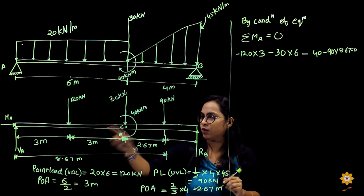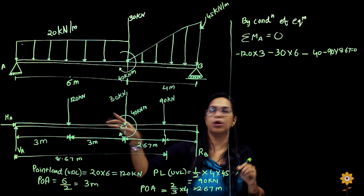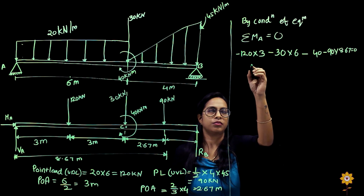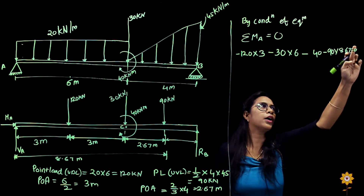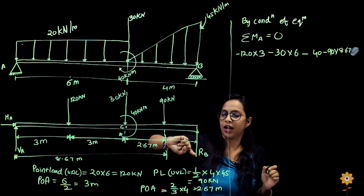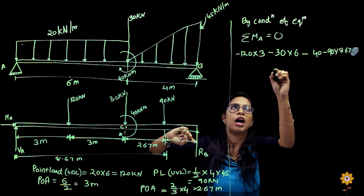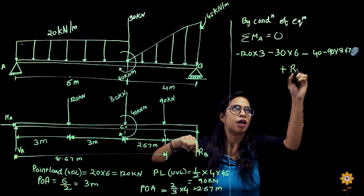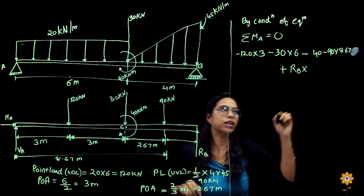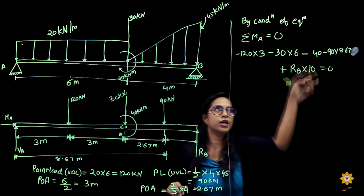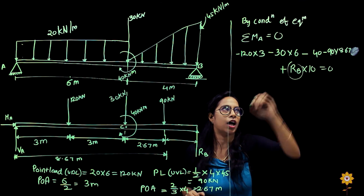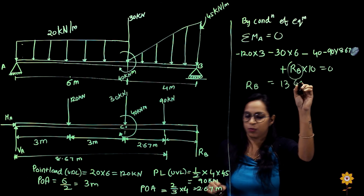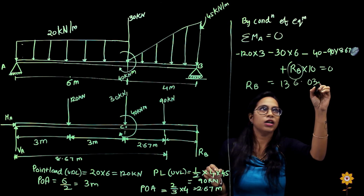RB into 10 equals 0, along with all the other terms. Solving this equation gives RB equal to 136.03 kilo Newton.